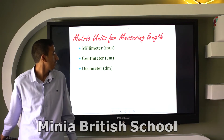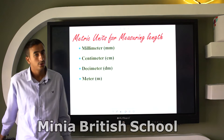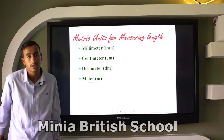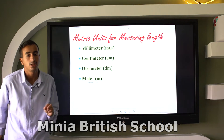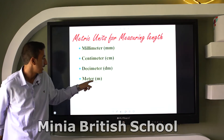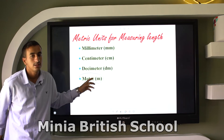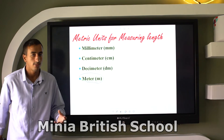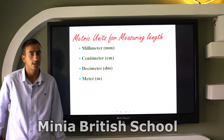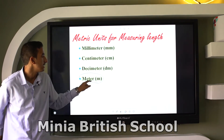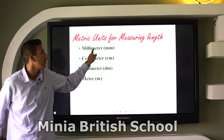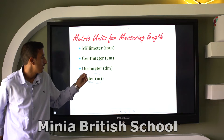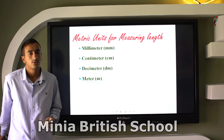The next unit is meter. We can consider meter as the common unit of length. It is the standard common unit, and the units below it are decimeter, centimeter, and millimeter.